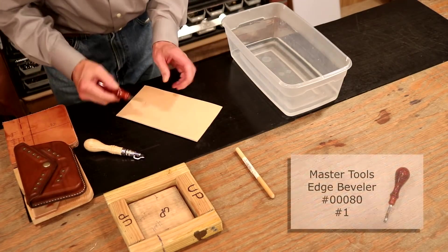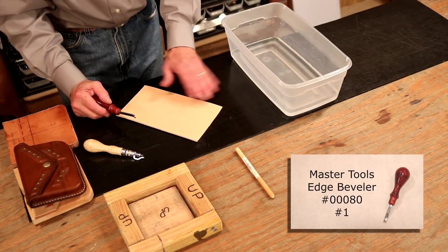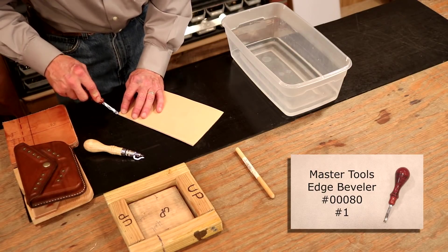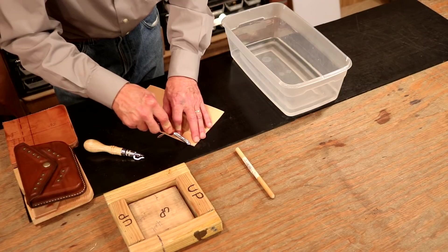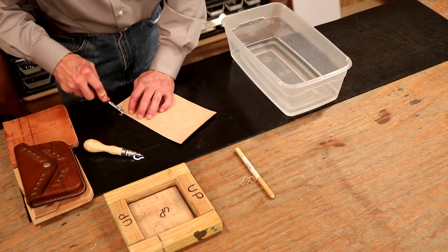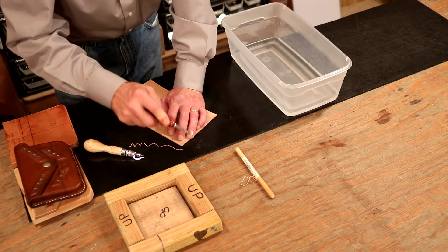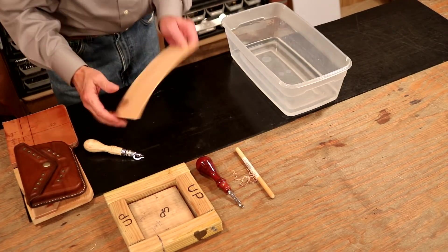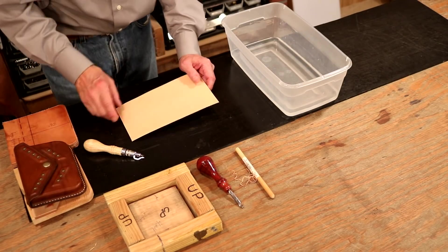There we go. Now, number one edger, we're going with a four to five ounce. So let's use a number one master tools edger. Look how easy that cuts. Nice. Let's do the same thing on the flesh side. Good. Now we haven't forgotten that step. I feel much better.